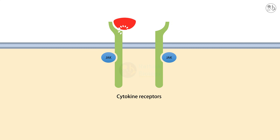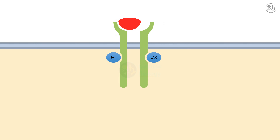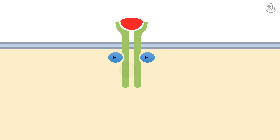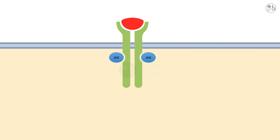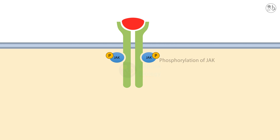When a cytokine binds, it causes the receptor to dimerize, or form a pair with another receptor. This brings JAKs into close proximity and allows them to phosphorylate each other as well as the receptor.